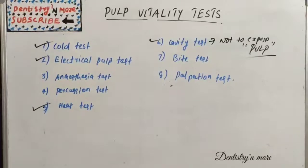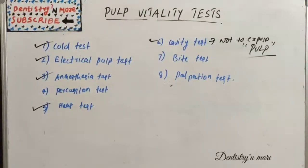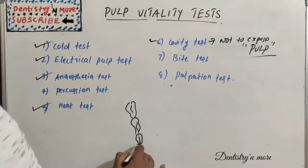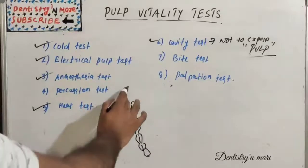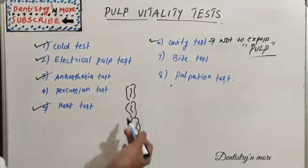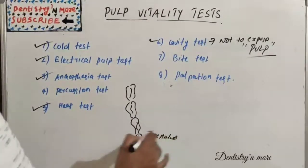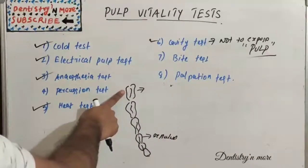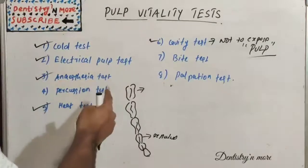With the cavity test, two outcomes are expected: immediate severe pain indicates vital pulp, and no sensation indicates non-vital pulp. Next is the anesthesia test, used when the patient cannot specify the site of pain and other techniques are inconclusive. We anesthetize a single tooth at a time using only an intraligamentary injection, starting with the most posterior tooth in the suspected quadrant.